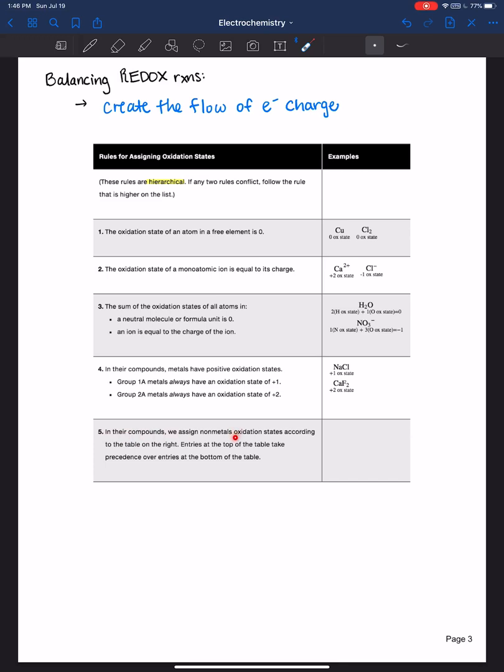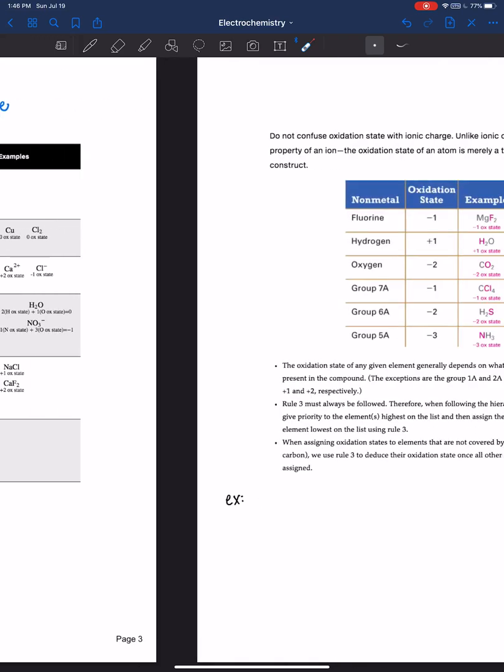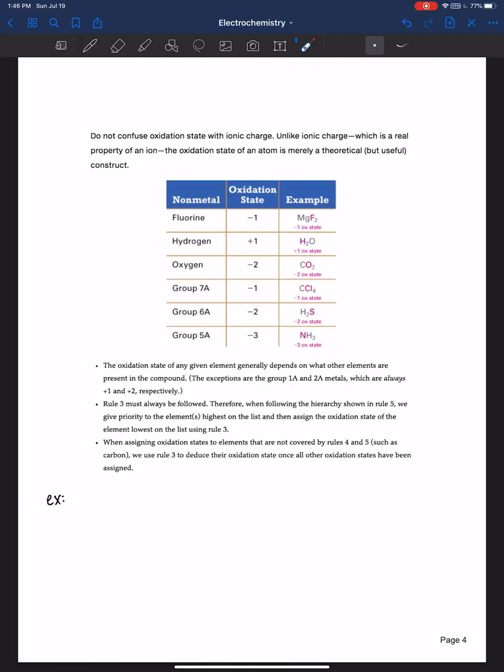Then you look at the non-metals. We assign non-metals oxidation states according to the table on the next page. Entries at the top, once again, hierarchical. On top of the table, take precedence over entries at the bottom. So you can see here, chlorine is going to have a negative one oxidation state. Hydrogen plus one. Oxygen negative two. Group 7a negative one. Group 6a negative two. Group 5a negative three.